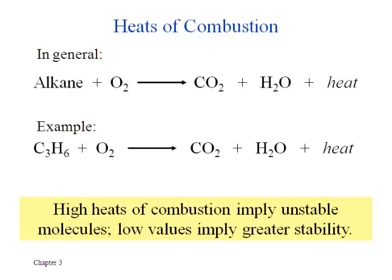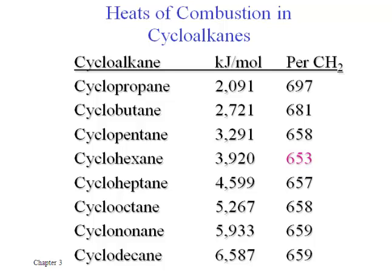This next slide shows the results for cycloalkanes. It will automatically be true that the more carbons and hydrogens you have, the more CO₂ and water you create when you combust them, and the more heat they generate. So to make the comparison fair, we take the energy values in the middle column and divide them by how many CH₂ units they have. Cyclopropane has three such units, cyclobutane has four, going down to cyclodecane which has ten. Dividing the molecule energy values by the number of CH₂ units gives you the number in the last column, and those are really the numbers to compare for stability.